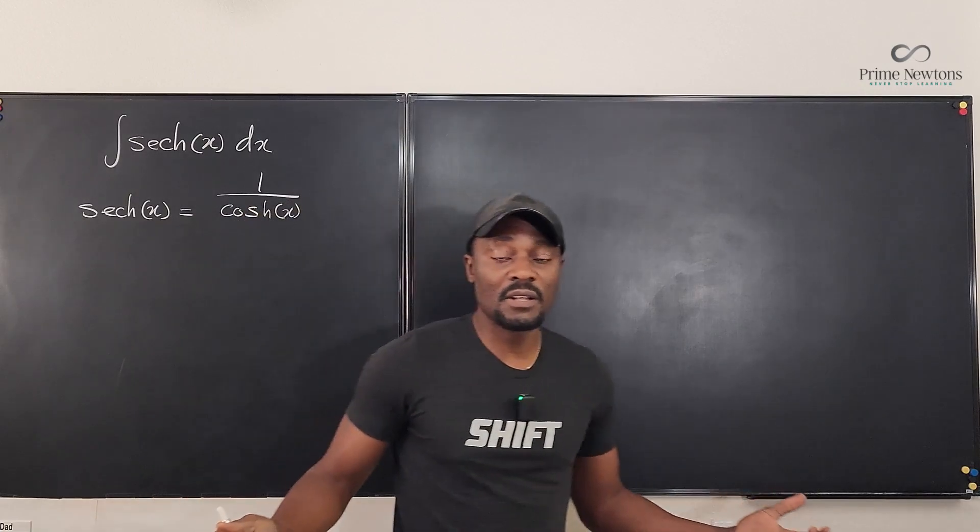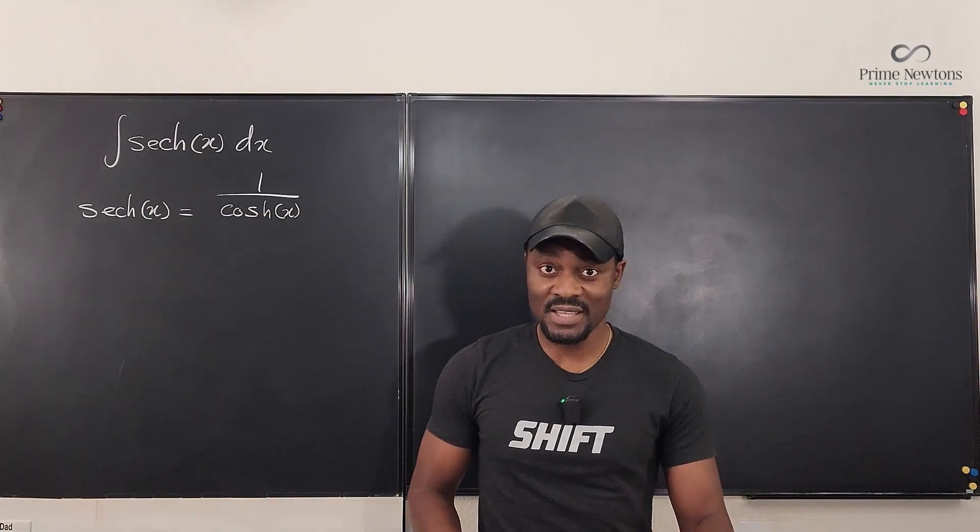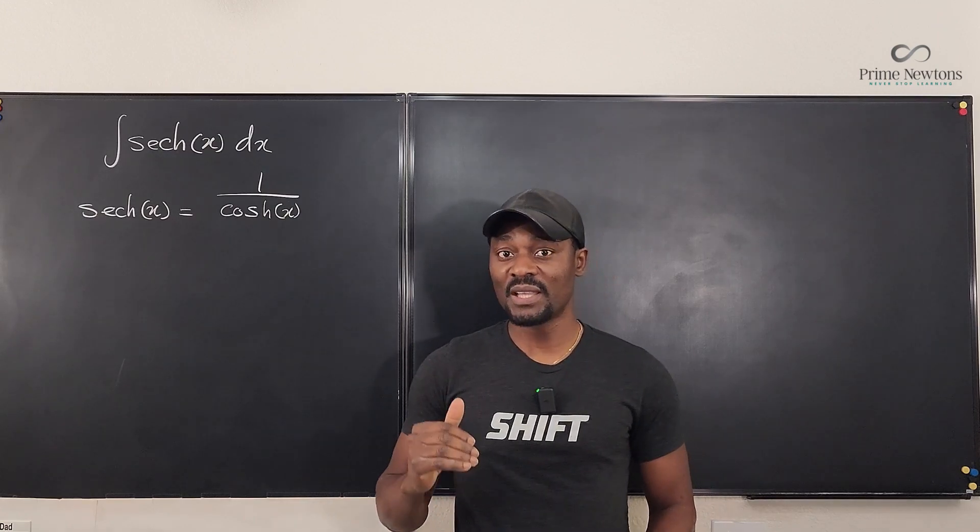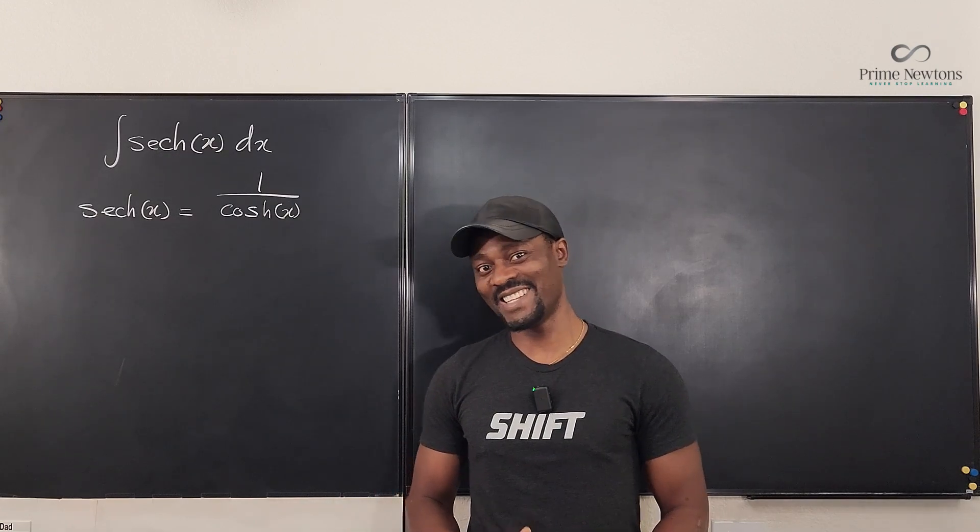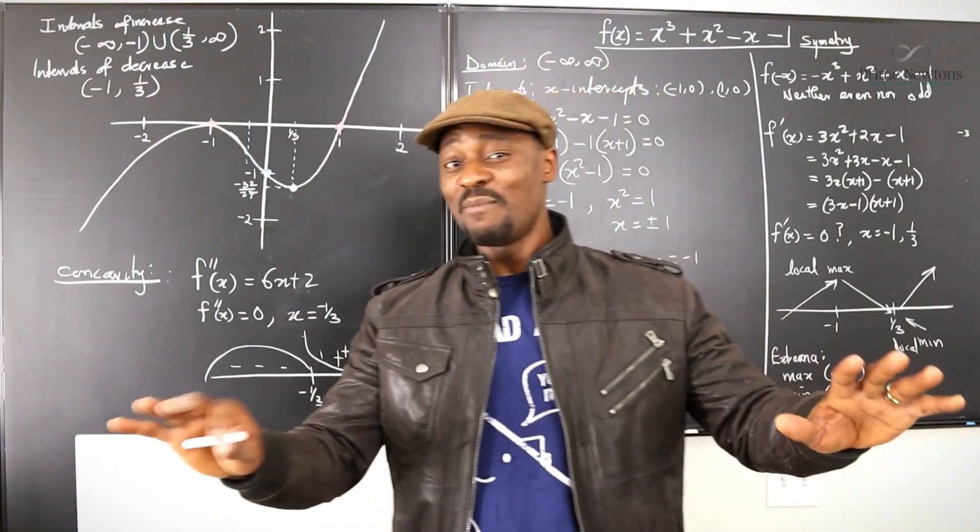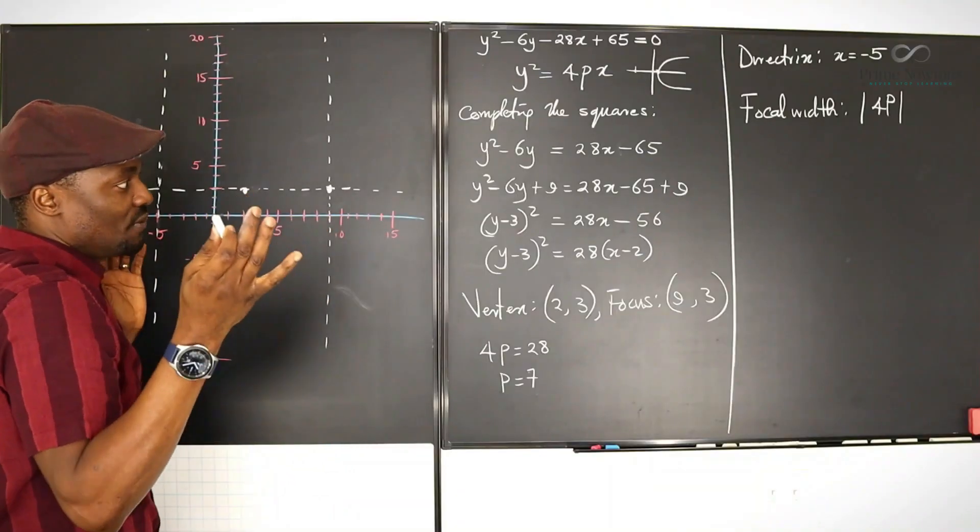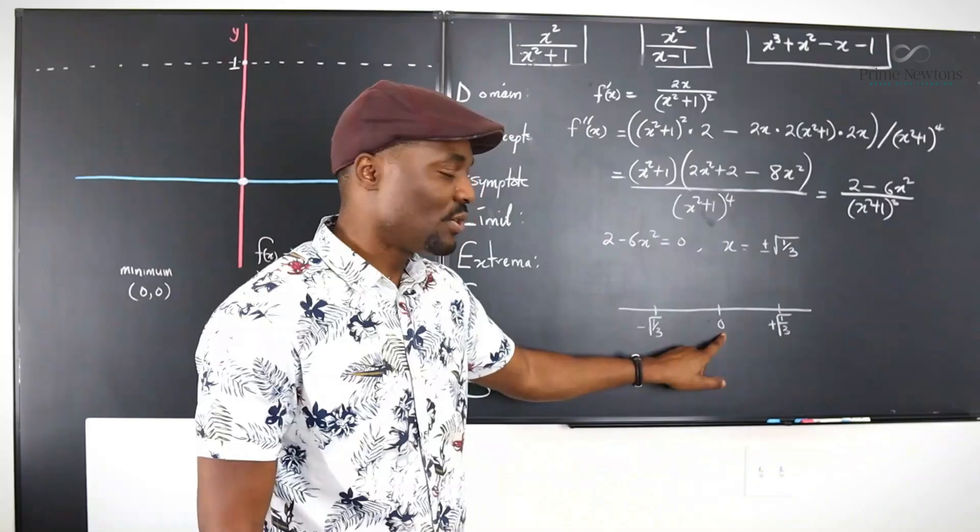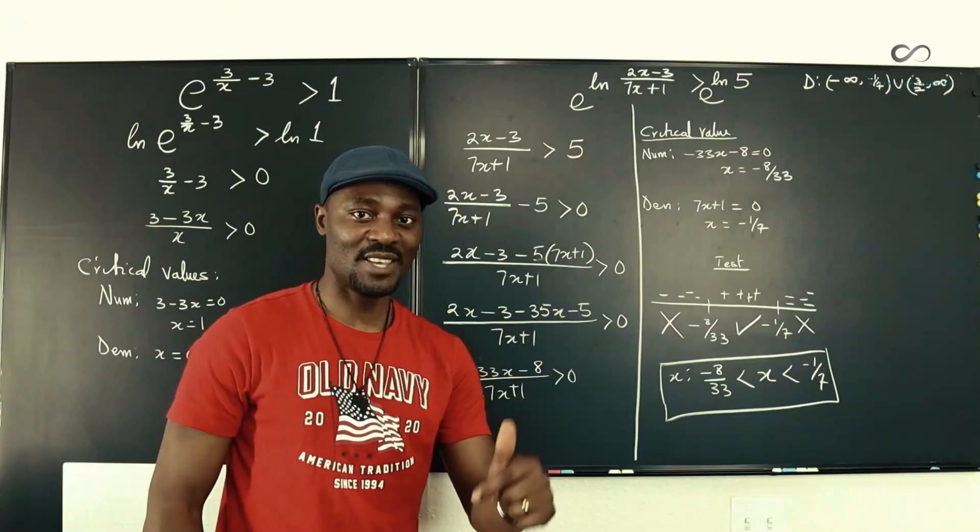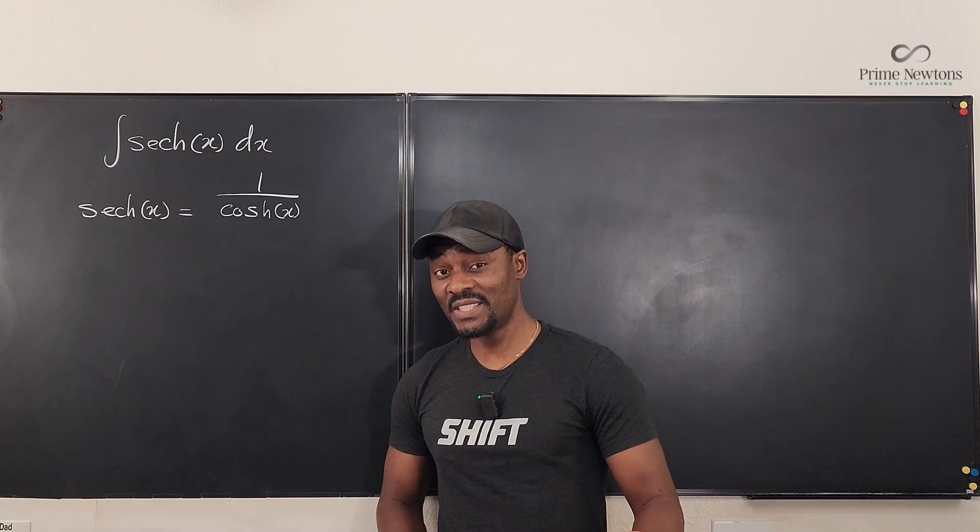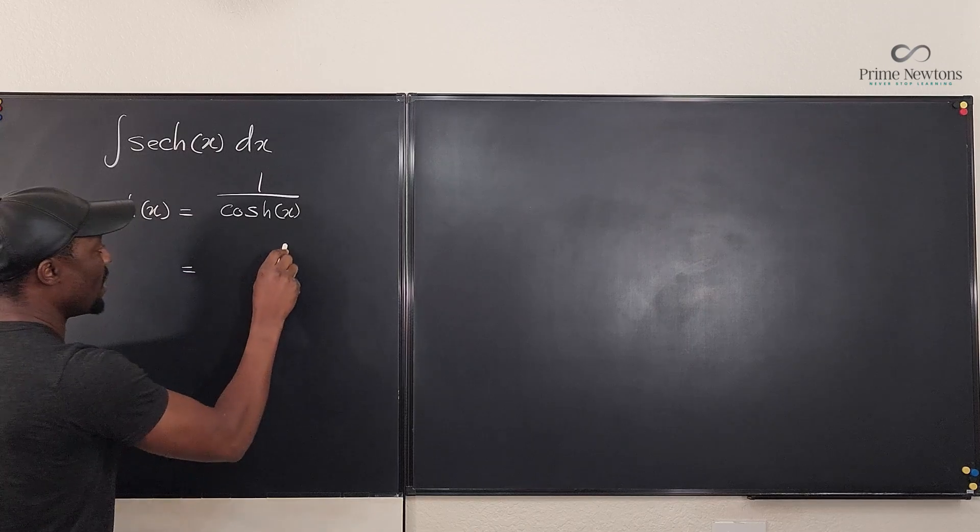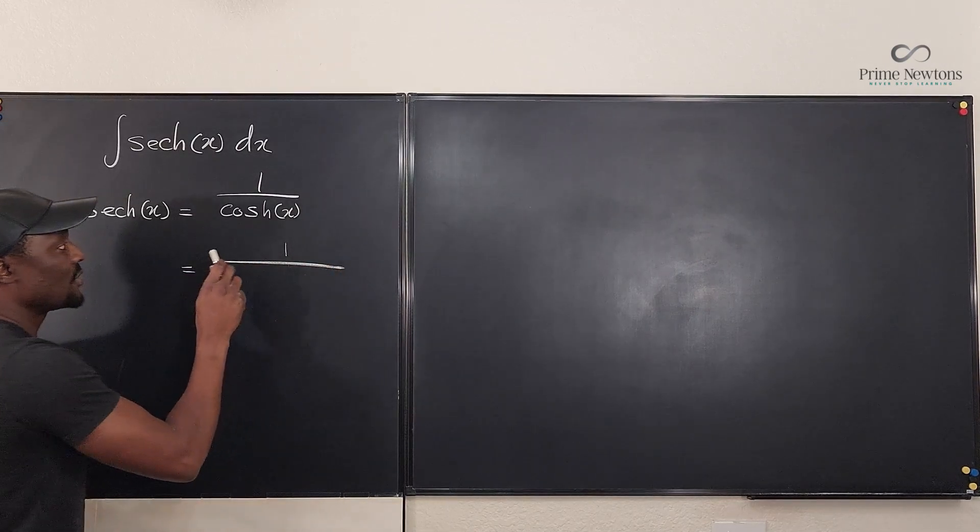That's all you need to tell yourself: that hyperbolic secant is the reciprocal of hyperbolic cosine. Let's get into the video. So with this definition, all I have to do is say that this is equal to 1 over, I know the definition of hyperbolic cosine.